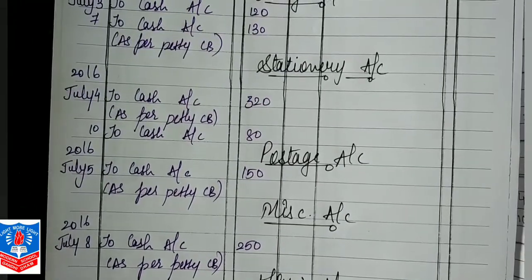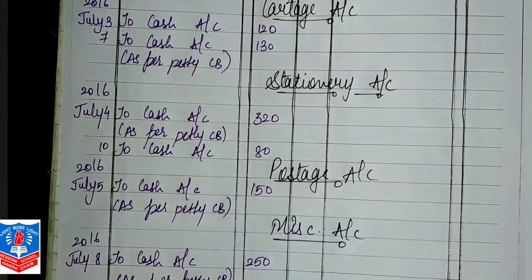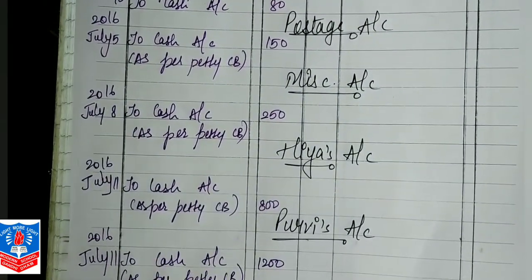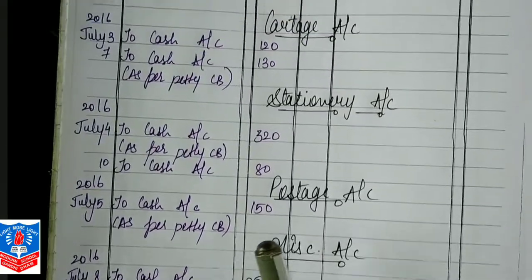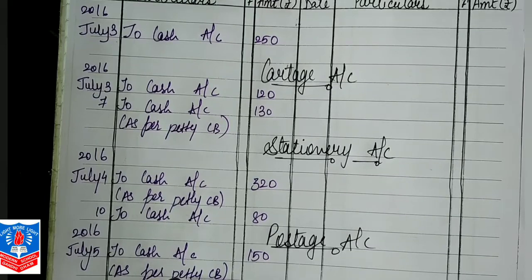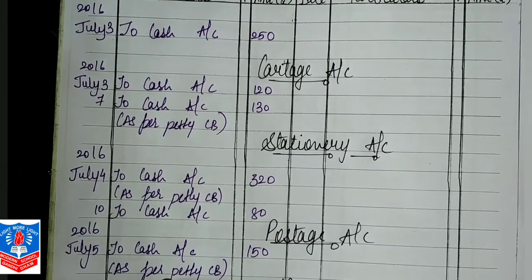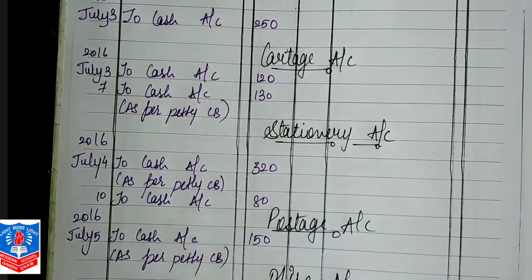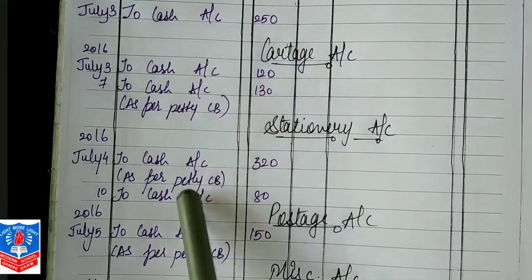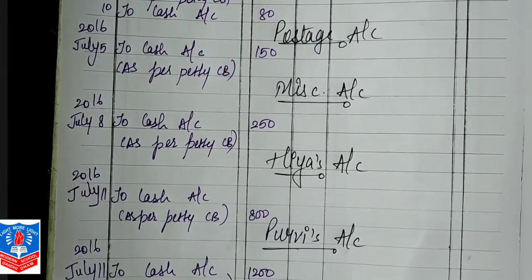From this we understand that all the effects from the petty cash book came on the debit side. Because this is our petty cash book in which our cashier has made only payments. Debit what comes in, credit what goes out. All these are our expenses, whose nature is debit, and cash went out from all of them — that is why we have written To Cash Account in all of them.